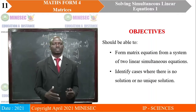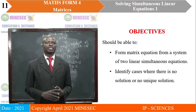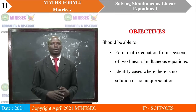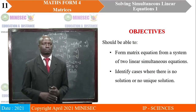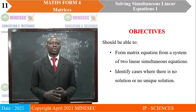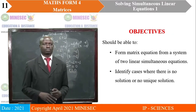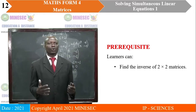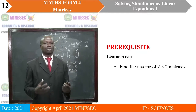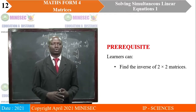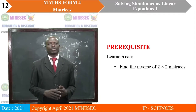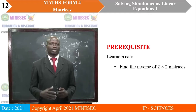The objectives are that by the end of this lesson, the learner should be able to form a matrix equation from a system of two linear simultaneous equations. Secondly, the learner should be able to identify cases where there is no solution or unique solution. The prerequisite is that the learner should be able to find the inverse of any 2×2 matrix, if the inverse exists.